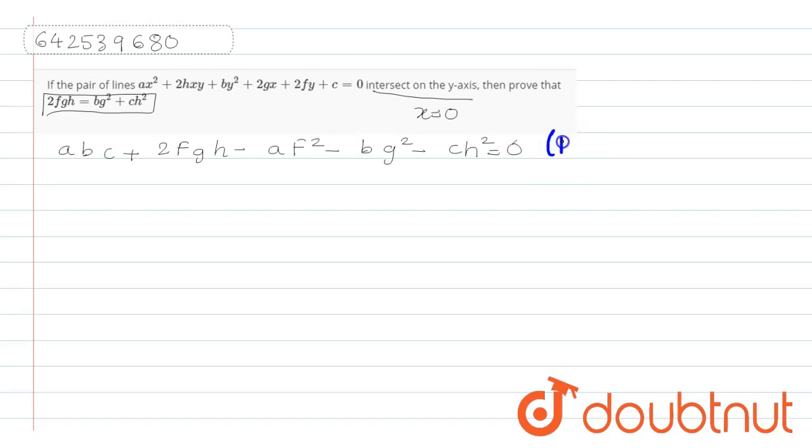Dear friends, this is the condition for pair of straight lines. That means the given equation is a pair of straight lines only if it satisfies or fits into this equation. So now, what are we going to do?